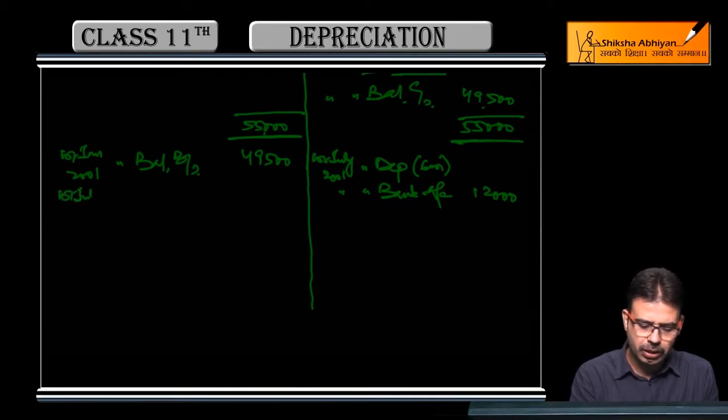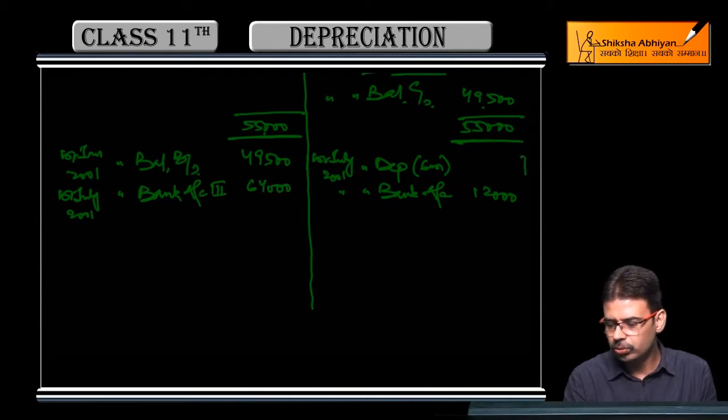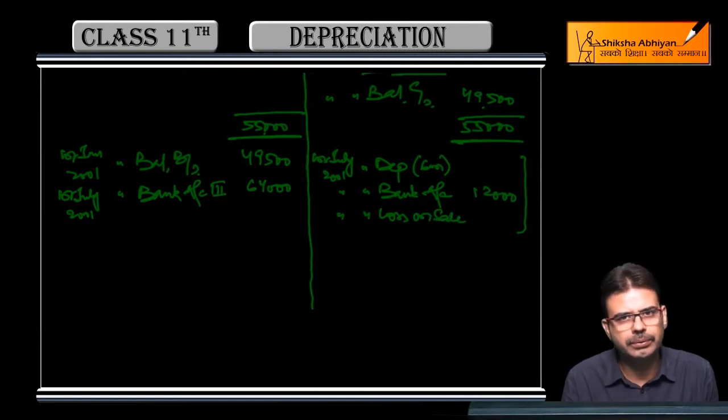First July 2001, whenever we sell, we apply depreciation. By bank, how much did we sell for? 12,000. And on first July itself we purchased new machinery, to bank account, third machinery 64,000.